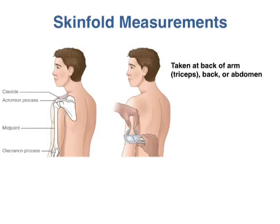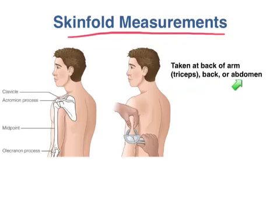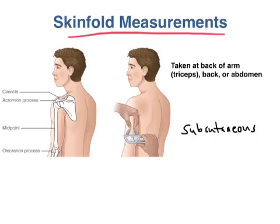A more direct way to measure the amount of fat on a person's body is to literally measure it. One way is to take skinfold measurements using calipers to pinch the skin at various places on the body — often at the back of the arm, the back, or the abdomen. This measures subcutaneous fat, the fat layer lying underneath the skin between the muscles and the skin. Skinfold measurements can be used to assess change over time, estimate body density and body fat percentage, making them a better indicator of obesity than BMI.